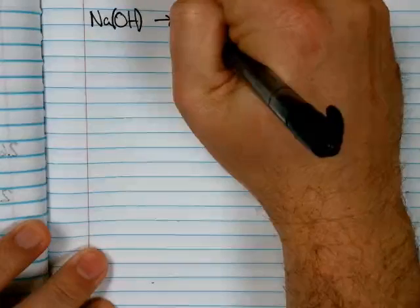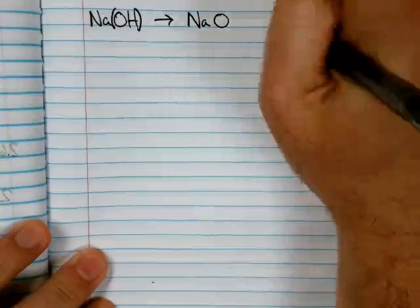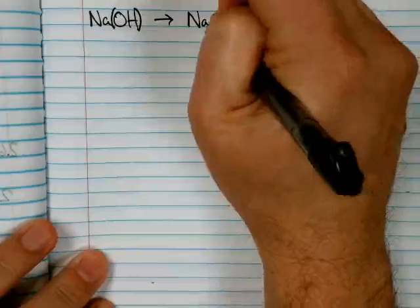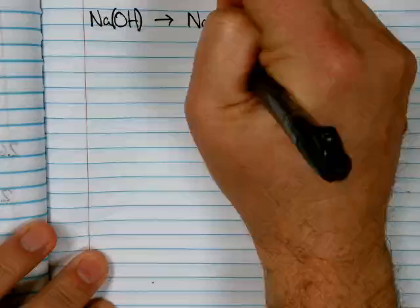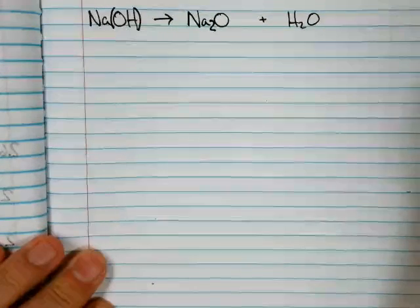So a metal oxide is Na2O and then water. Sodium has a plus one, oxygen has a two negative. So that's your formula.